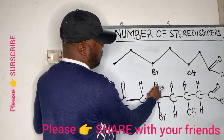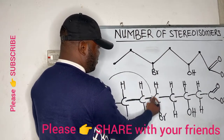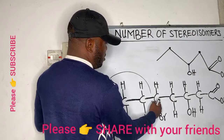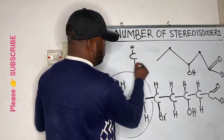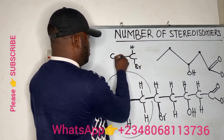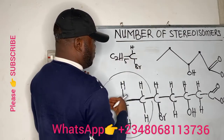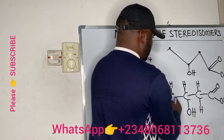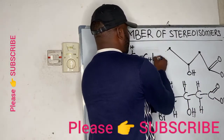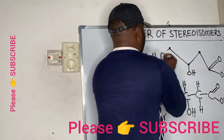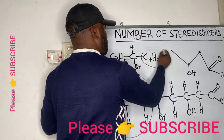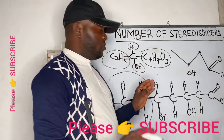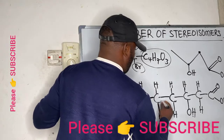Let's look at carbon 5. Up here we have H, down here we have bromine, at the back we have the whole of this chain which is an ethyl group (C2H5), and in front we have a C4 chain with 7 hydrogens and 3 oxygens. The 4 groups bonded to this carbon are all different from each other. So this carbon here is chiral.